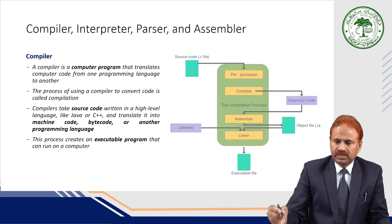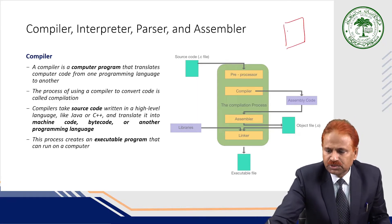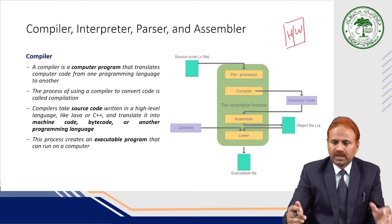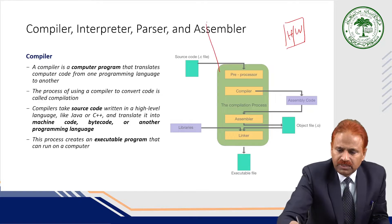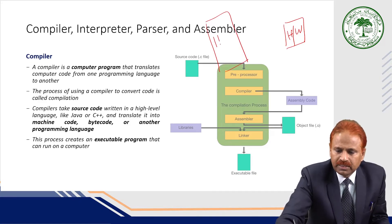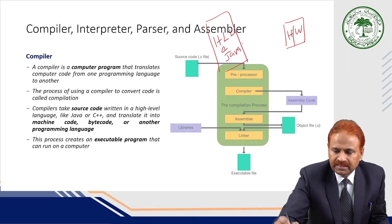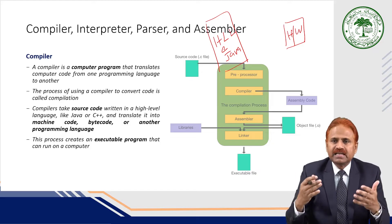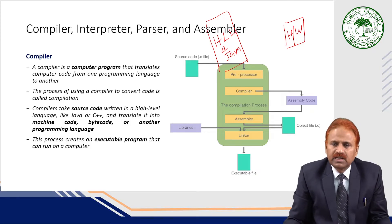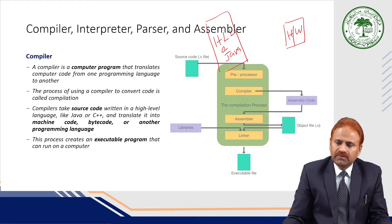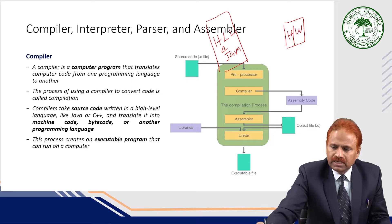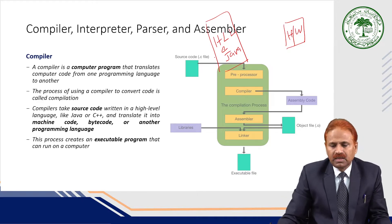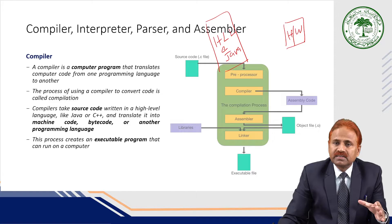The hardware or machine ultimately executes the program. As users, we are very comfortable writing programs in high-level languages like C or Java, because it is easier for humans to write code in English-like language. However, it is difficult for hardware to directly understand programs written in high-level language.